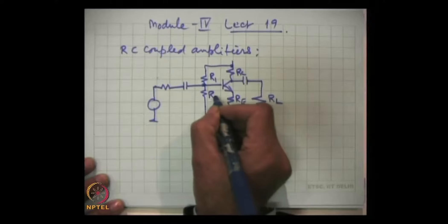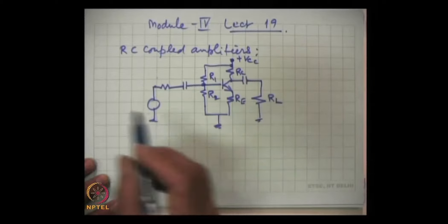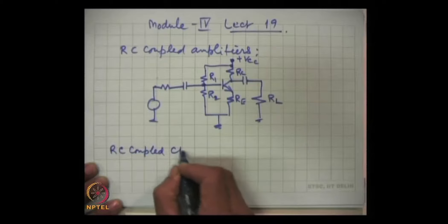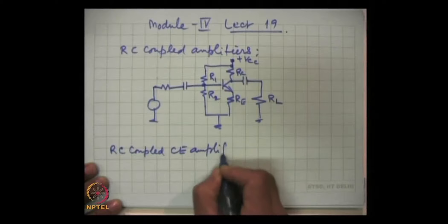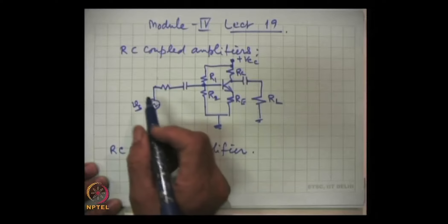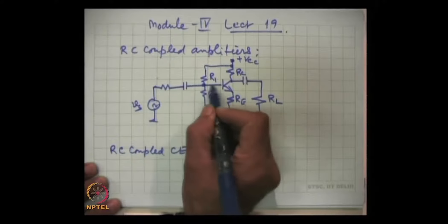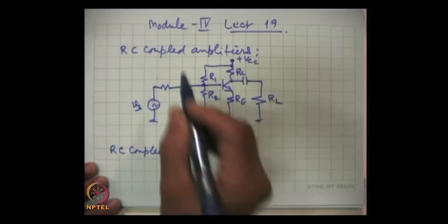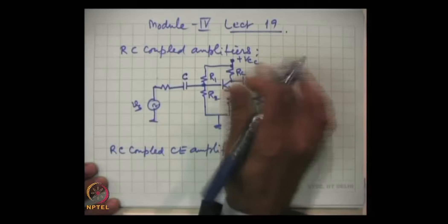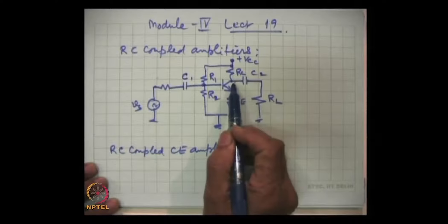This is the complete RC coupled common emitter amplifier. This is the signal, which might be coming from a microphone or an oscillator, and it is to be coupled to this amplifier. This is the coupling capacitor C, and this is another coupling capacitor which couples the load to the amplifier.